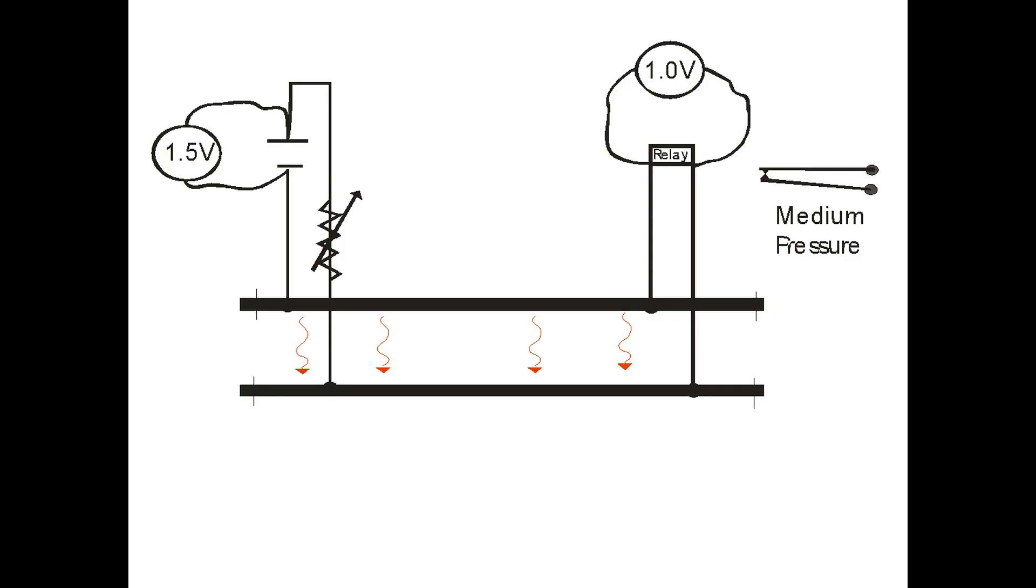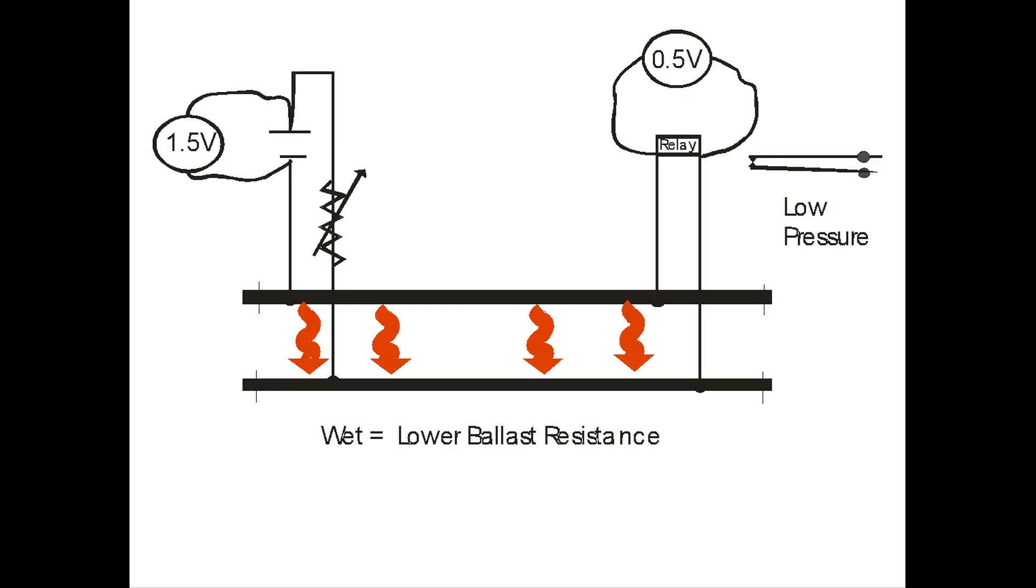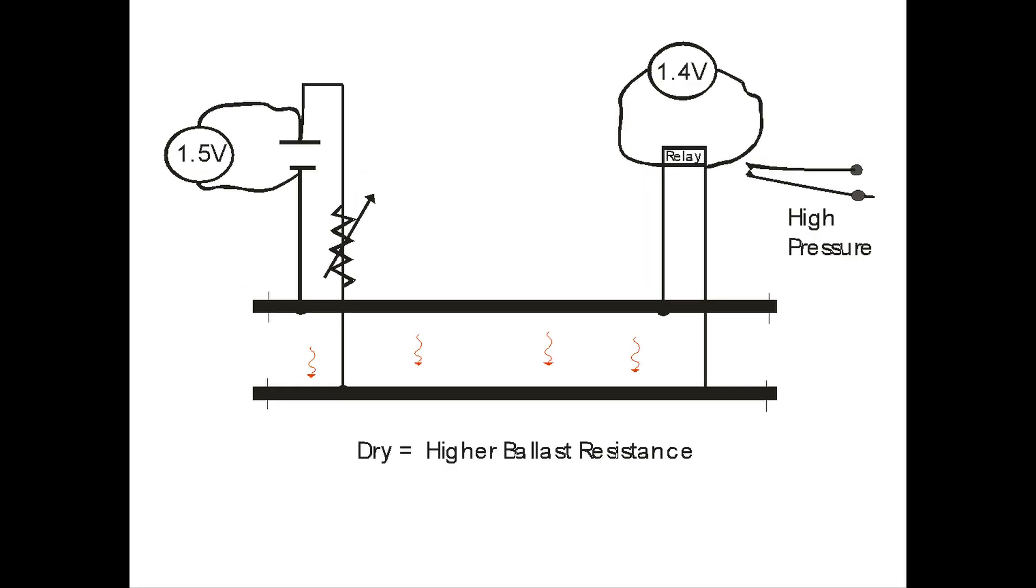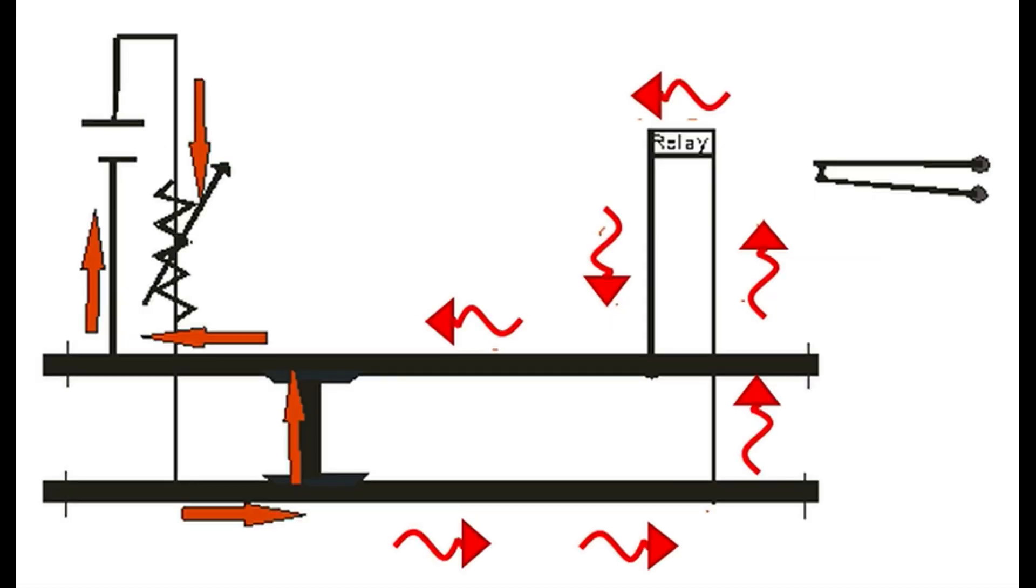Then it's onto ballast resistance. After explaining what it is and how it affects the characteristics of the track circuit, we show how weather conditions change the performance. Moving onto the drop shunt, this is explained in detail.